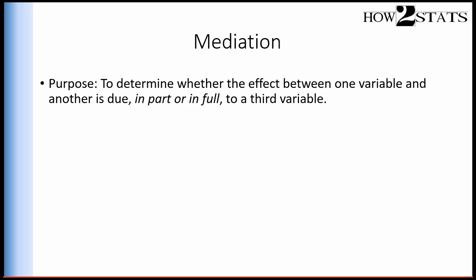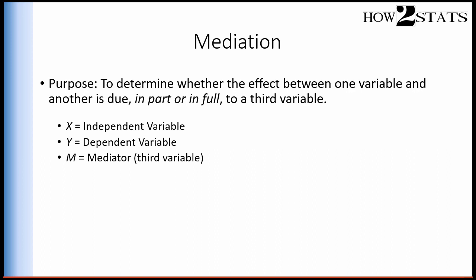Mediation — what is the purpose? The purpose of mediation is to determine whether the effect between one variable and another is due in part or in full to a third variable. That third variable is hypothesized to mediate the effect between one variable and another, either partly or fully. In regression terms, we have an independent variable symbolized by X and a dependent variable symbolized by Y. The new variable is the mediator — that's the third variable, symbolized with the letter M.